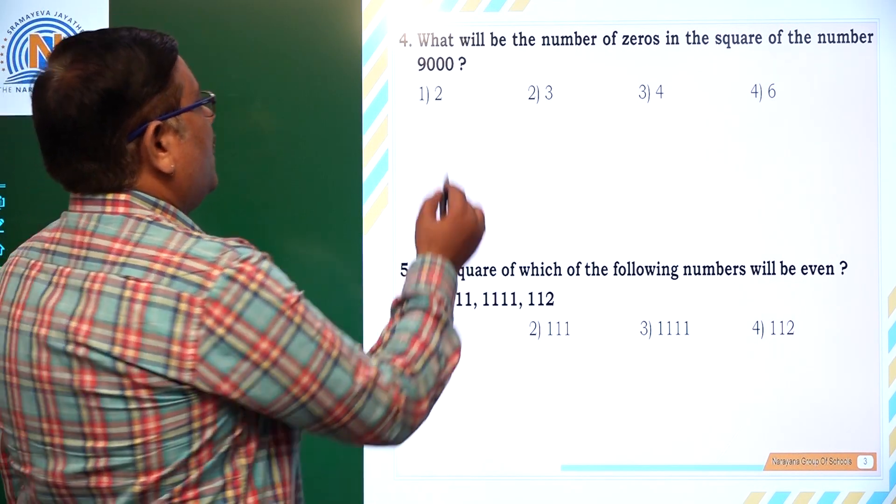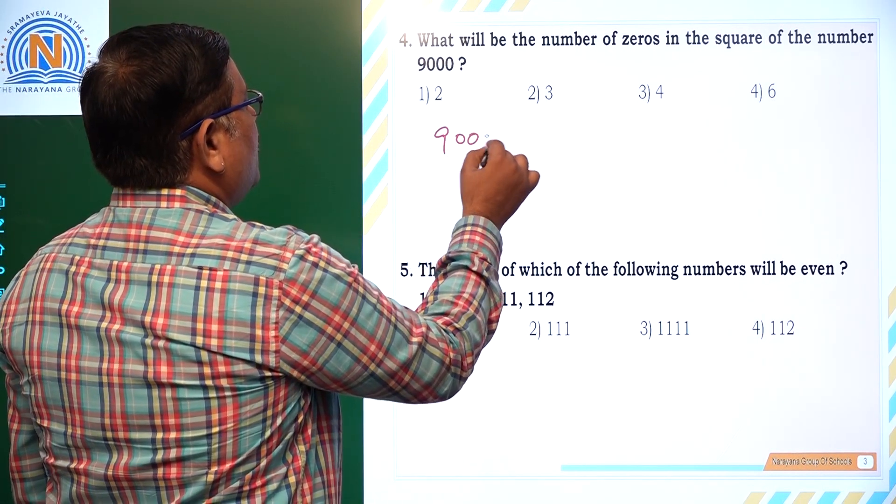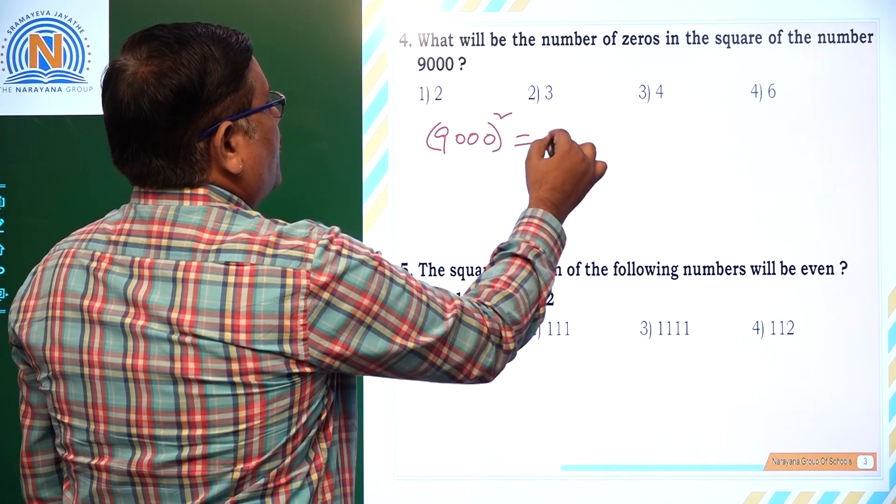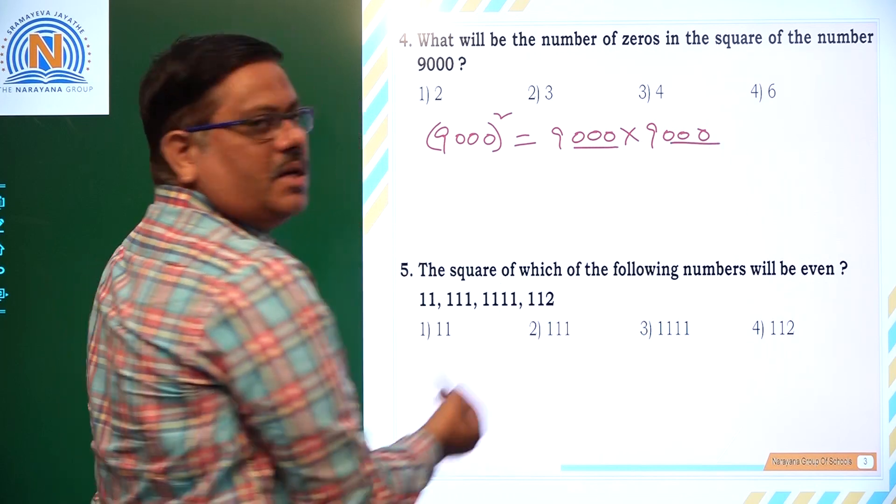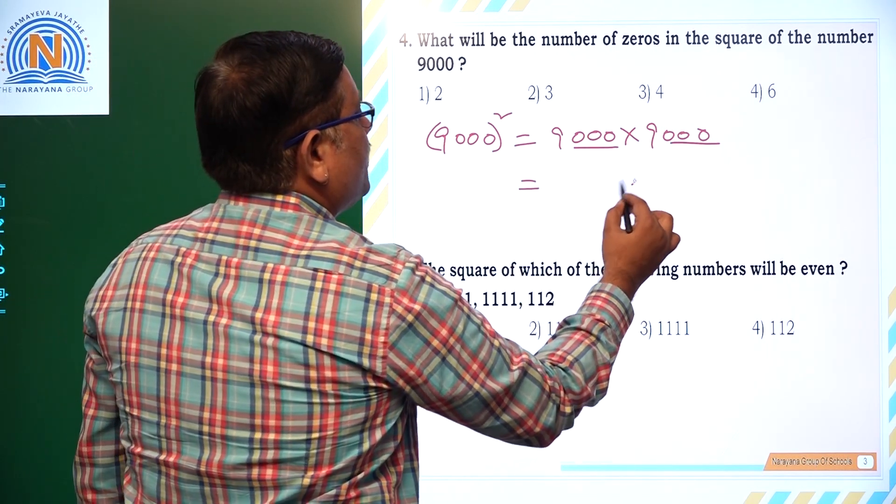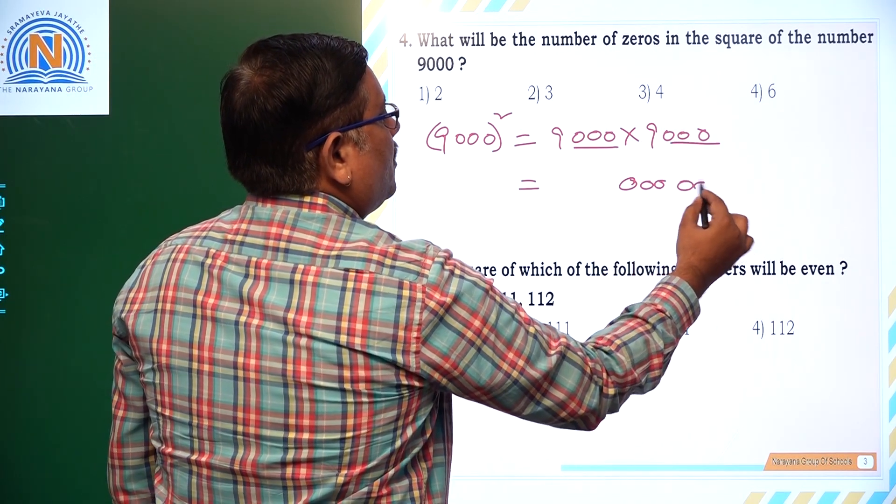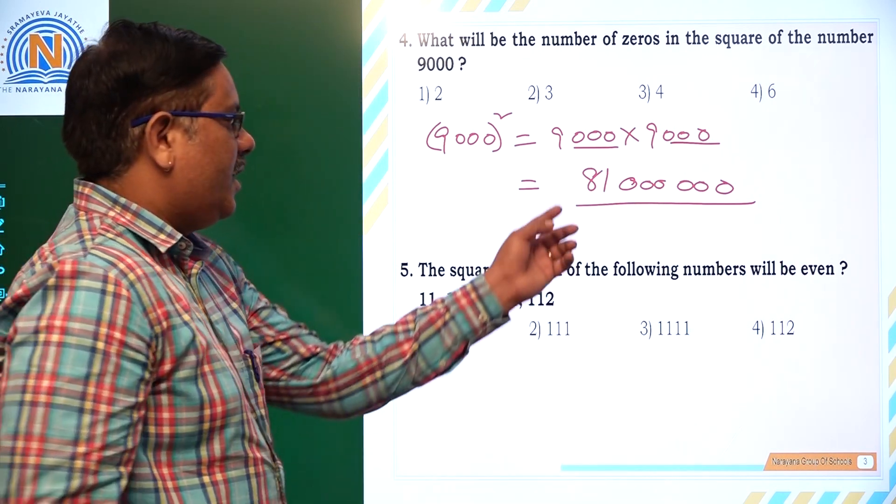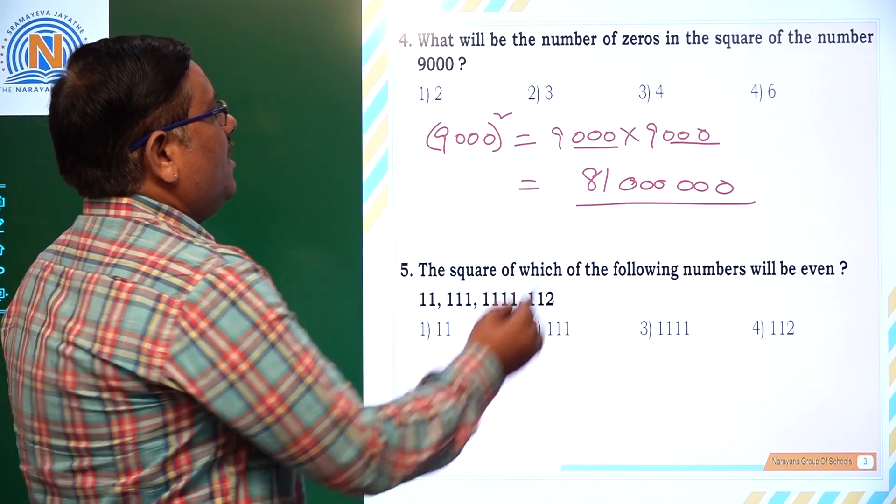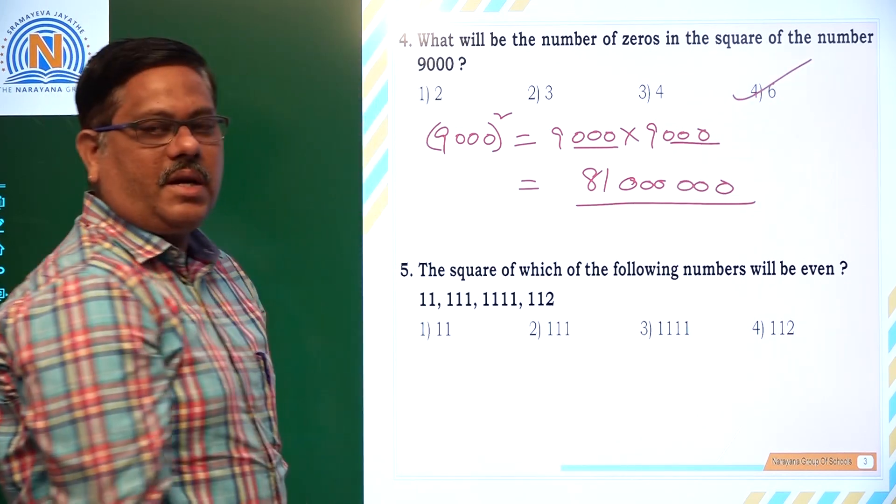Next, what is the number of zeros in the square of the number 9000? That is 9000 into 9000. So three zeros here and three zeros here, finally you are ending up with six zeros. 9 times 9 is 81, so that is 81 followed by six zeros. So at the end, how many zeros are there? Six. So fourth is the right answer.